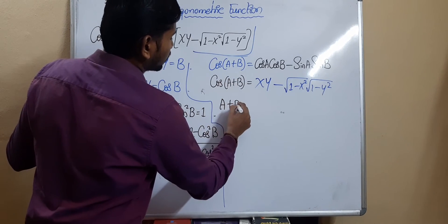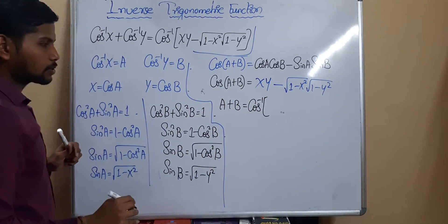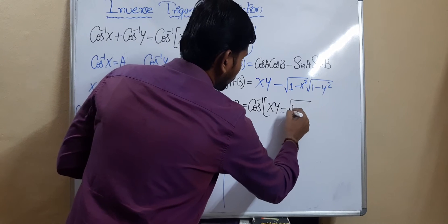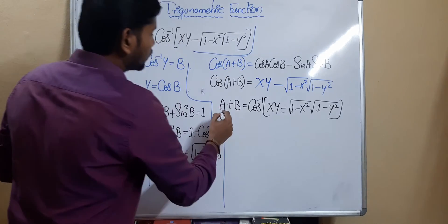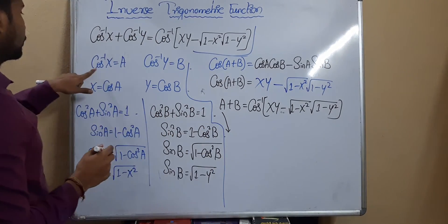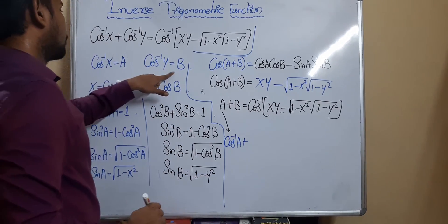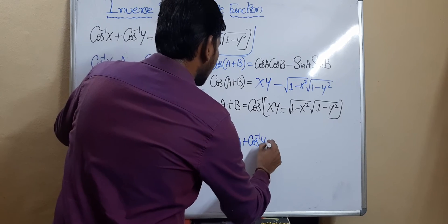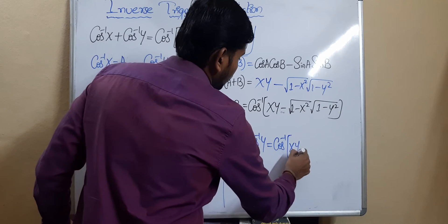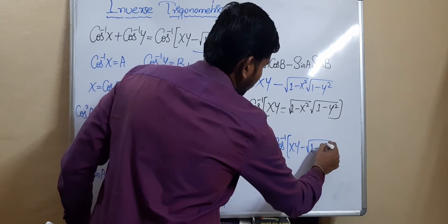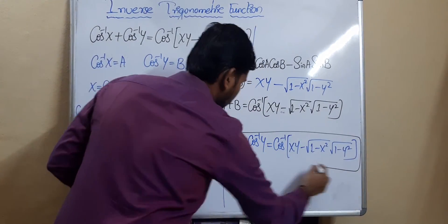Taking the inverse cosine on the right-hand side, a + b = cos⁻¹(xy − √(1 − x²)·√(1 − y²)). Substituting back, the value of a is cos⁻¹(x), and b is cos⁻¹(y), so: cos⁻¹(x) + cos⁻¹(y) = cos⁻¹(xy − √(1 − x²)·√(1 − y²)). This is a particular formula you need to remember.